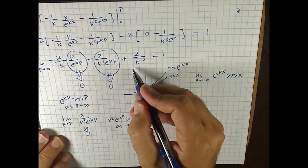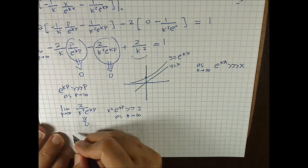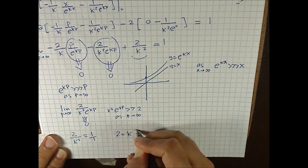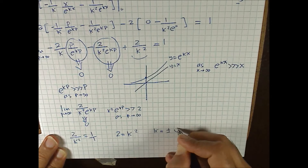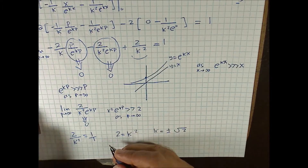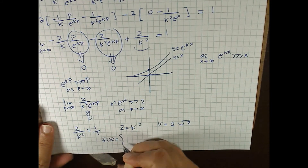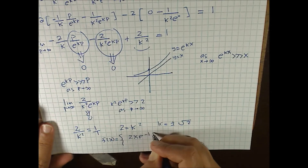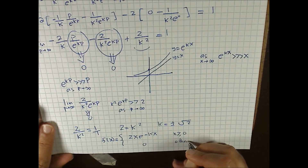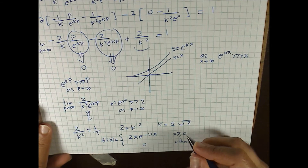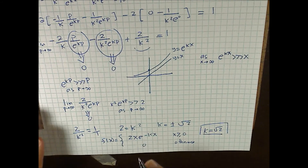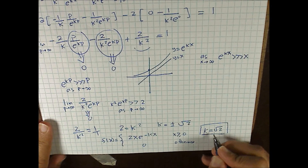What we're left with is just 2 over k squared equals 1. So 2 over k squared equals 1. Cross multiplying gives 2 equals k squared, so k equals plus or minus root 2. Looking back at the original function — f of x equals 2x e to the negative kx when x is positive — we have to choose k to be positive root 2 for this to make sense. We need a negative exponential so that the total area is 100%. So k equals root 2.